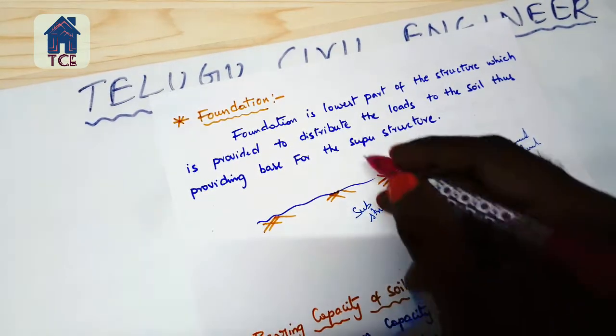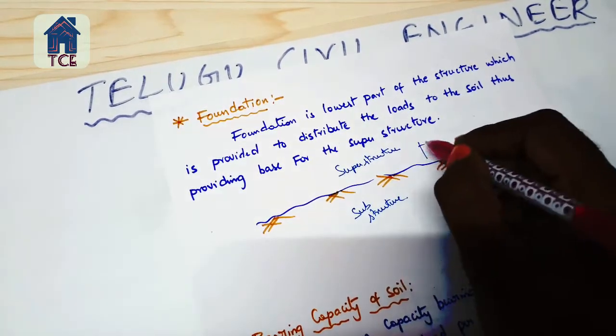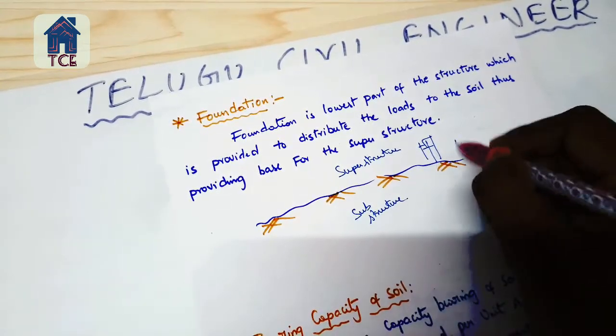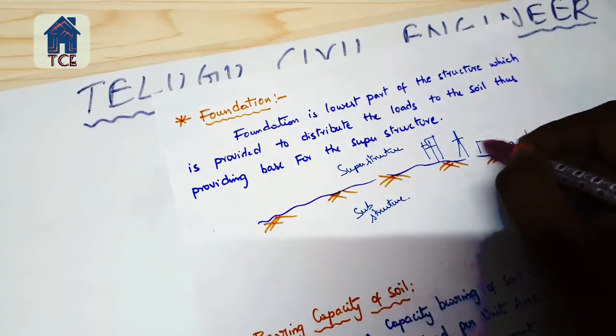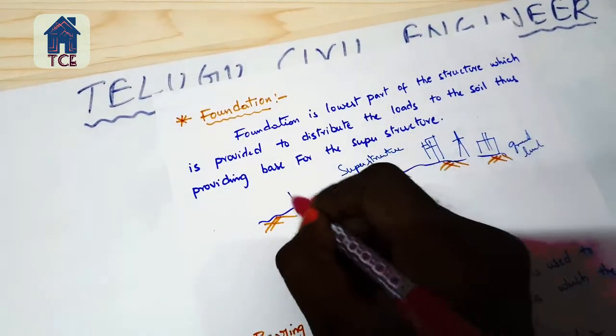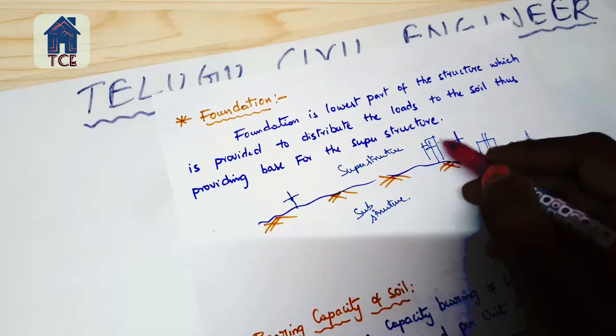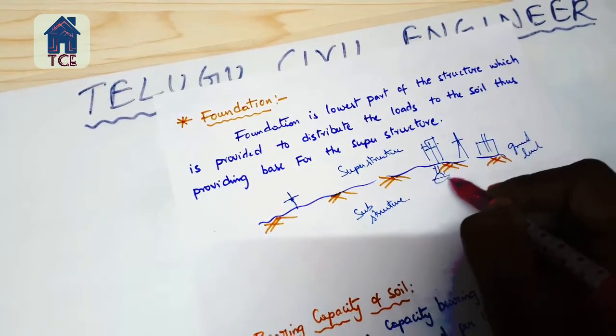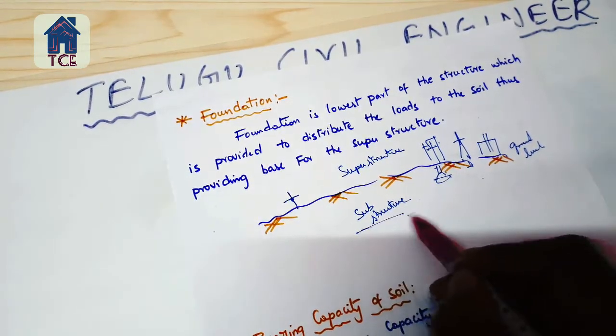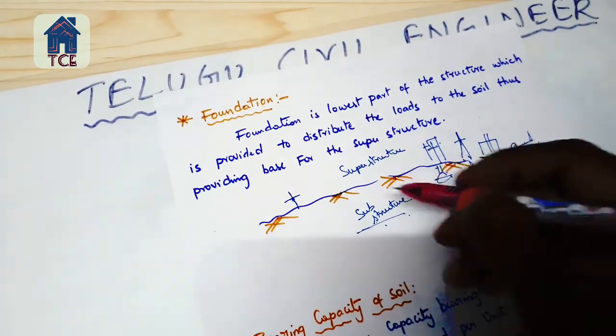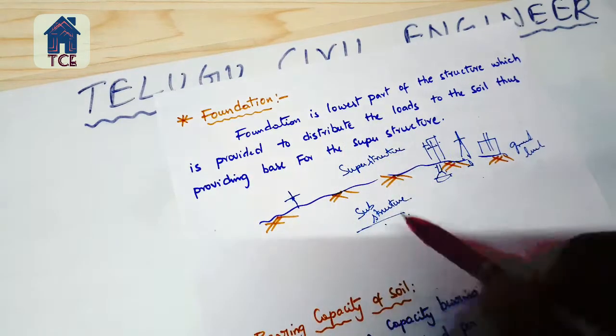This is ground level. Above ground level we have the superstructure, which includes buildings, towers, factories, temples, etc. Below ground level we have the substructure or foundation. The lowest part of the structure provides load distribution.